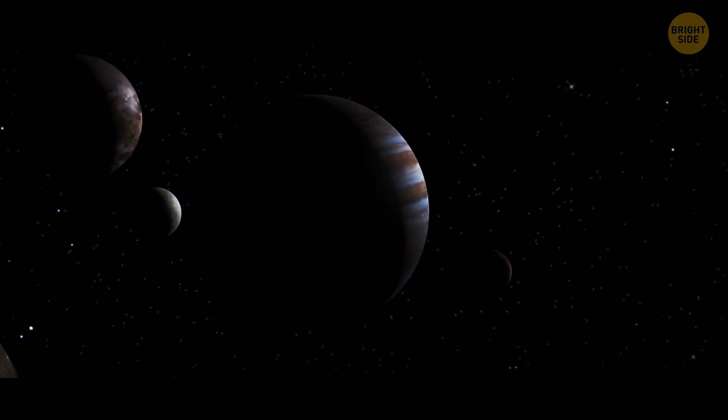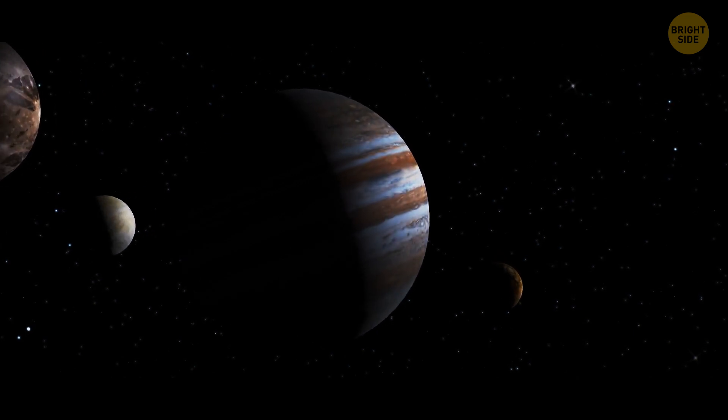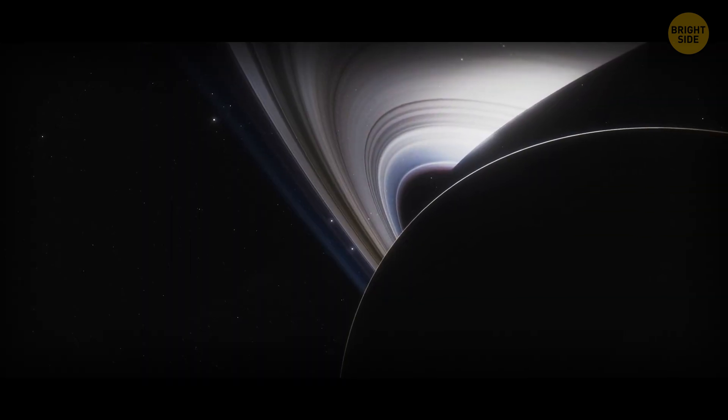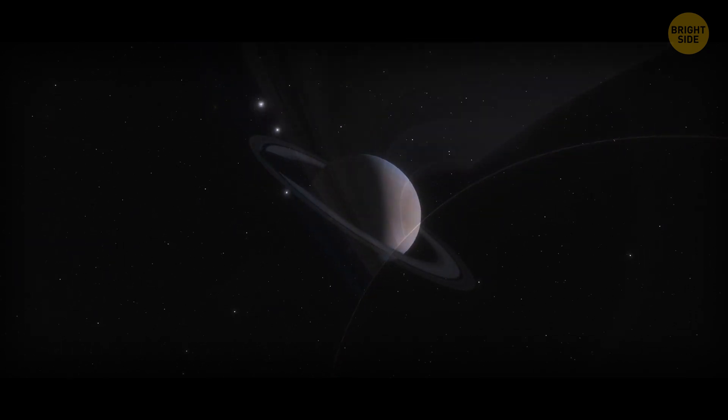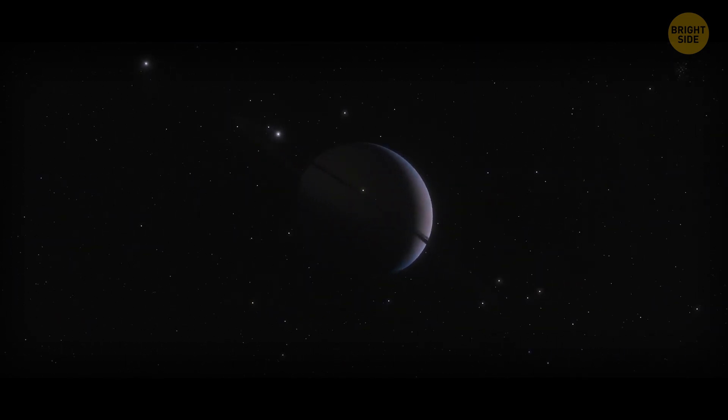Also, there are more moons in the outer solar system, and there are more rings there. Another thing may be that bigger planets have a bigger volume, so a ring system can remain stable there.